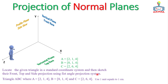Now a numerical problem is given: locate the given triangle in a standard coordinate system and sketch its front, top, and side projections using a first-angle projection system. Triangle ABC is given with coordinates: A at (2, 1, 4), B at (8, 1, 4), and C at (2, 6, 4) in the X, Y, Z coordinate system respectively, where each unit equals one centimeter.